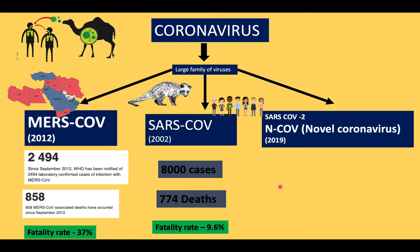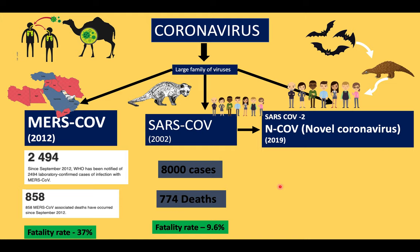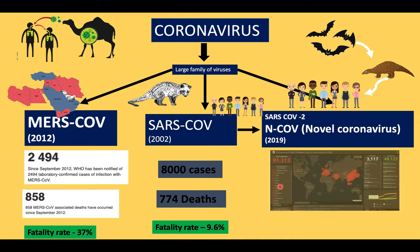The novel coronavirus is thought to have started from bats, which then transmitted to an animal known as the pangolin. The pangolin is a very rare and near-extinct animal found in eastern Asian countries as well as Africa. Handling this animal directly in markets or during transport has probably led to transmission of the virus from animal to humans, and it is now transmitted human to human via respiratory droplet infection, classified as a zoonotic infection.